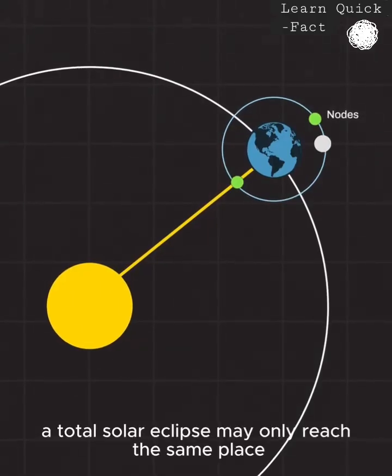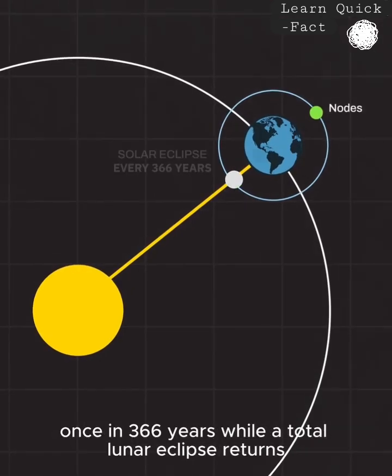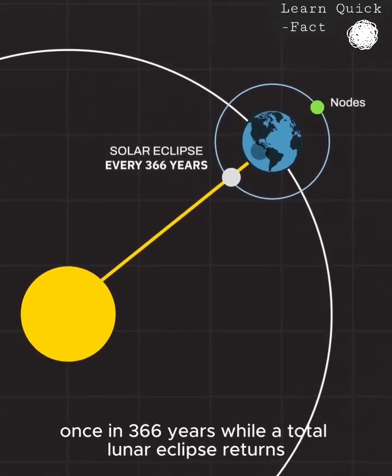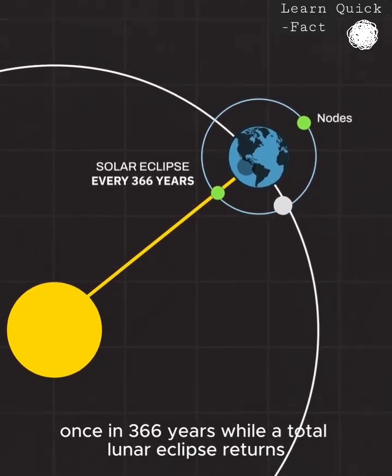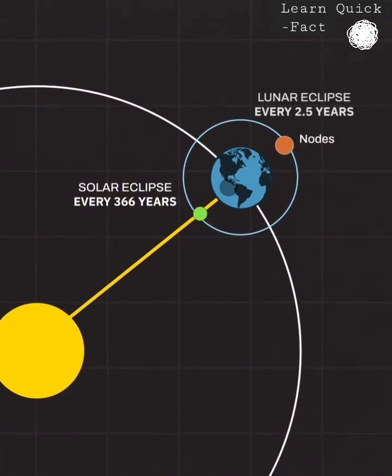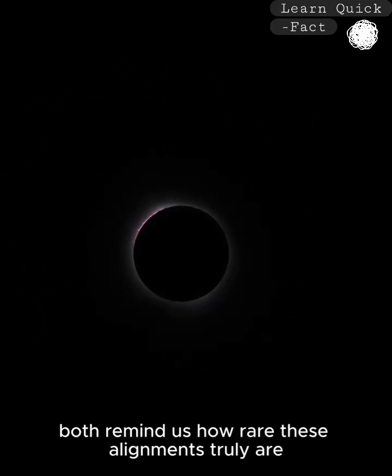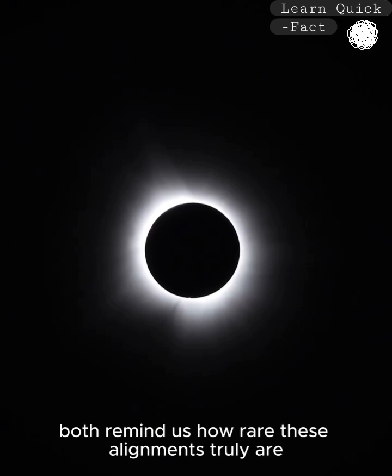A total solar eclipse may only reach the same place once in 366 years, while a total lunar eclipse returns about once every two and a half years. Both remind us how rare these alignments truly are.